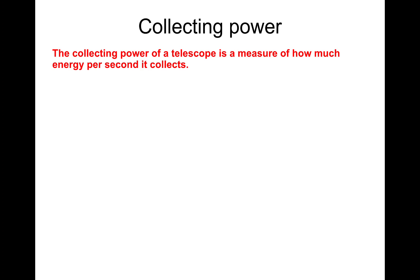So collecting power - the collecting power of a telescope is a measure of how much energy per second it collects. It depends on the area of its objective as well as the power per unit area of the incident radiation.